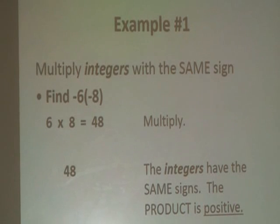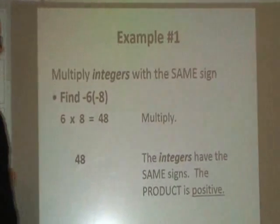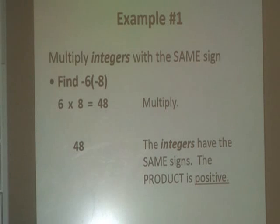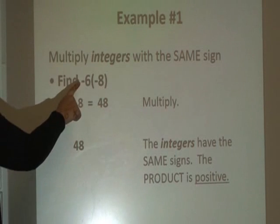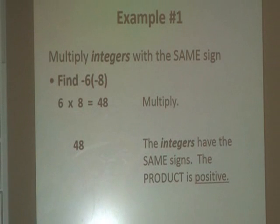Let's look at our first example. Please make note that this is multiplying integers with same signs. We'll find negative 6 times negative 8. Remember that when a number is connected to another number using parentheses, that simply means for us to multiply.